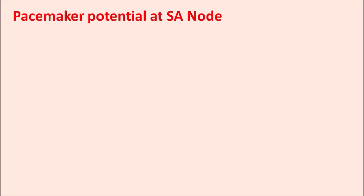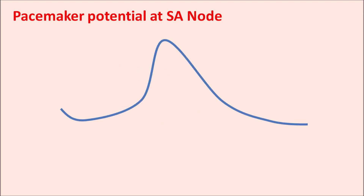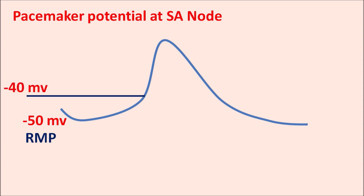Now let us see the pacemaker potential at HCN4 and how these ion channels are involved. These are the different phases of action potential within the pacemaker cells. At pacemaker cells, the resting membrane potential is somewhat less negative compared with non-pacemaker cells — around minus 50 to minus 60 millivolts. Minus 40 millivolts is the threshold potential where voltage-gated calcium channels open to produce depolarization.